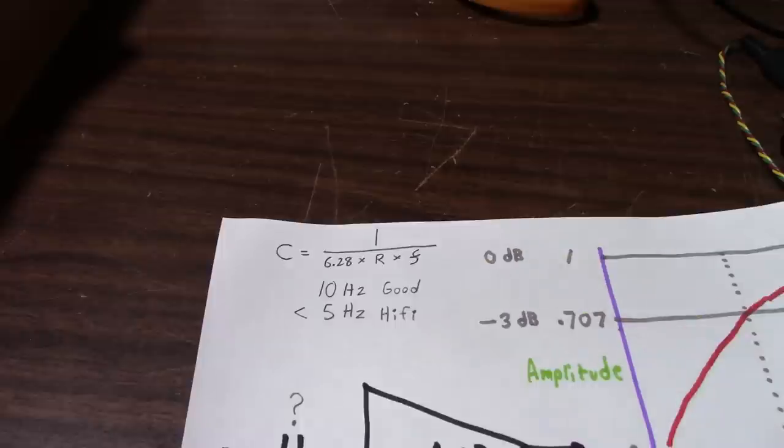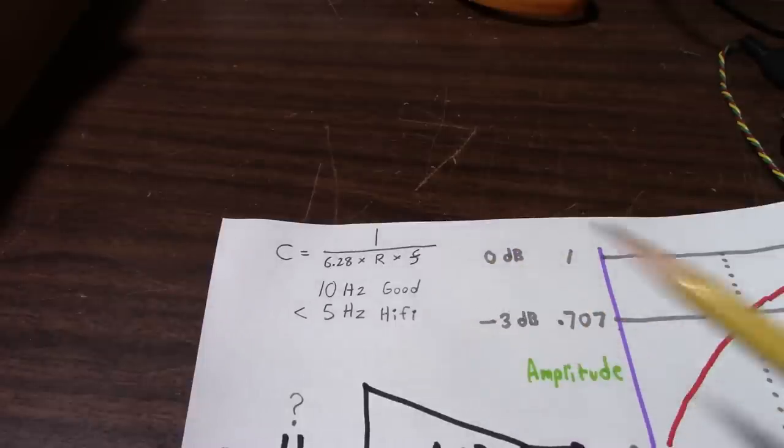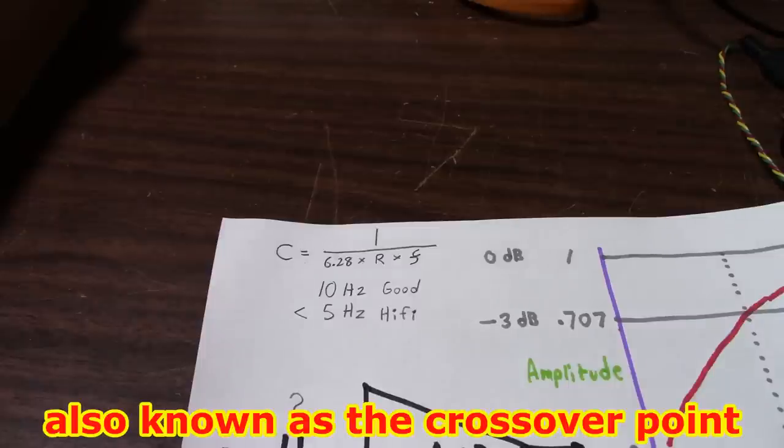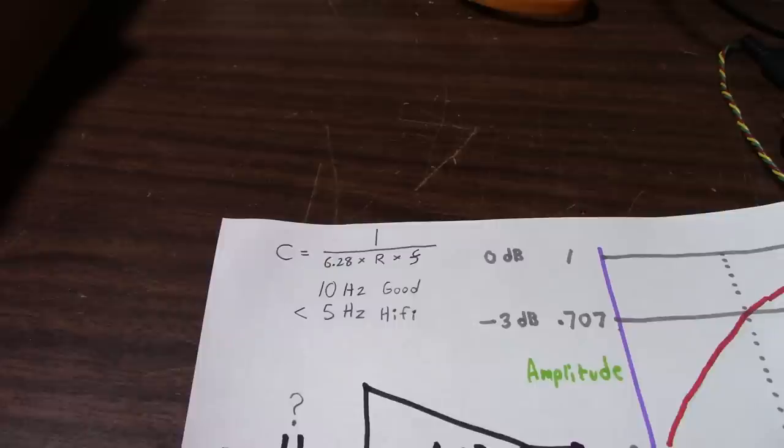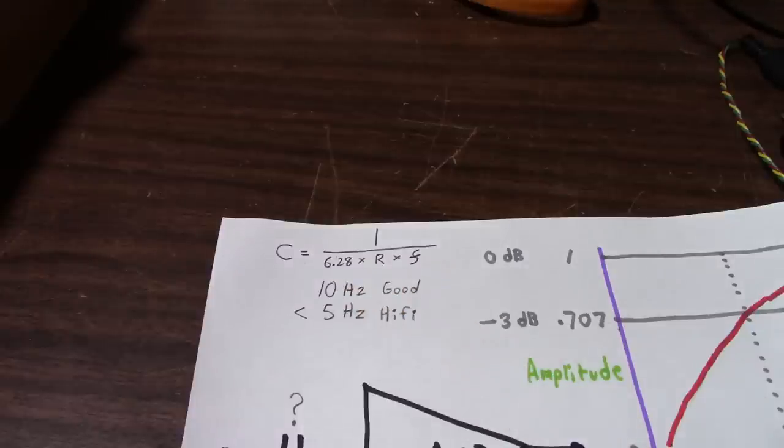So you want to plug in a frequency to use in your calculation for F here. What would that be? Well, you don't want to use 20 hertz, because this formula calculates what's known as the 3 dB down point, or 3 decibels down, which is the pole frequency of the simple filter. And 3 dB down would be about 71 percent of the full signal.